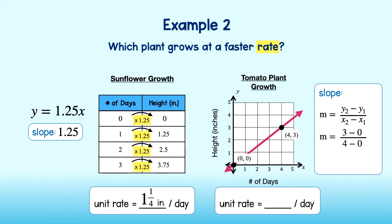Then, we can plug these values into our equation. 3 minus 0 is 3, and 4 minus 0 is 4. The slope is 3 fourths, and so my unit rate is 3 fourths of an inch per day. Comparing the two, we see that the sunflower grows at a much faster rate than the tomato plant.